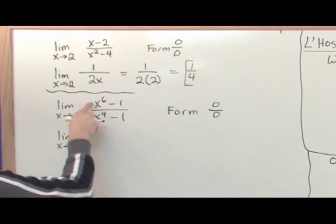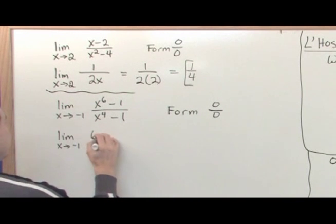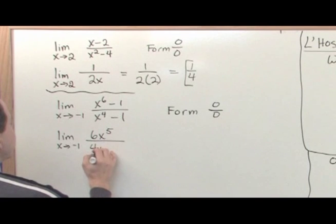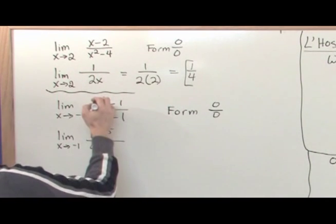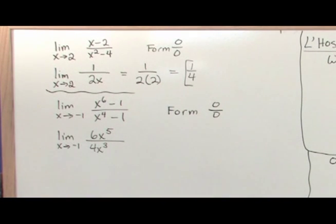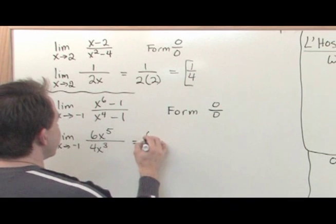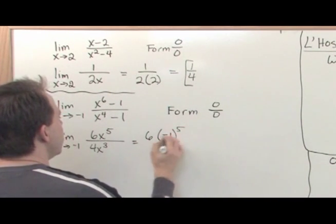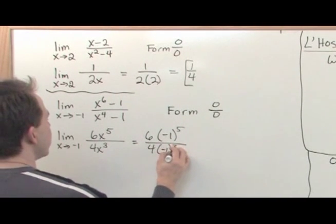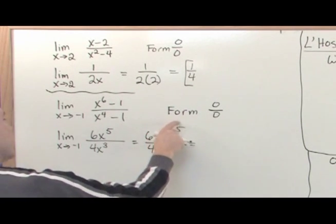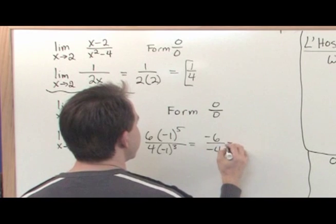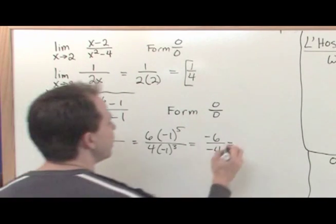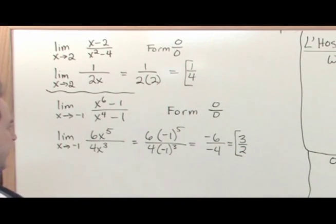With x approaching negative one, take the derivative of the top — that's six x to the fifth power — over the derivative of the bottom, which is four x to the third power. Now evaluate: six times negative one to the fifth power gives negative six on top (odd power), and four times negative one to the third power gives negative four on the bottom. So the answer is negative six over negative four, which is positive six-fourths, reduced to three-halves.